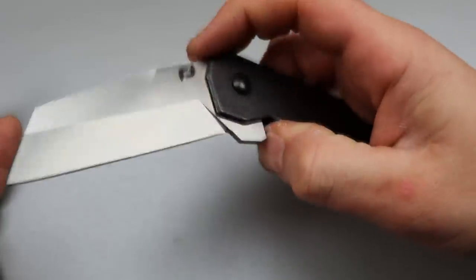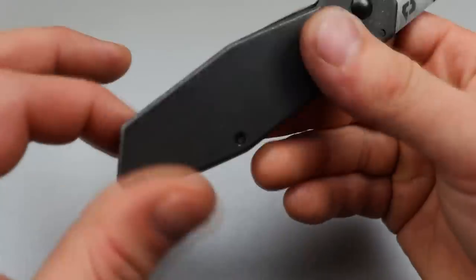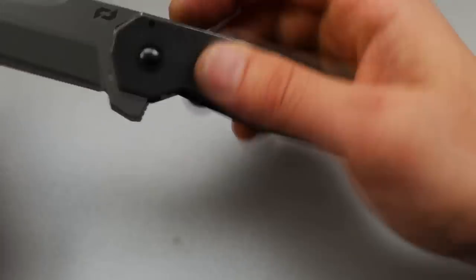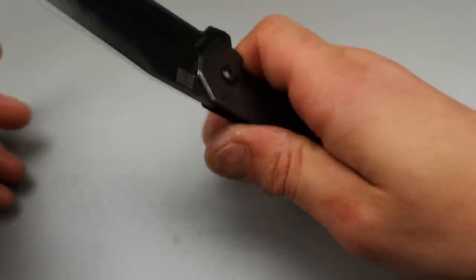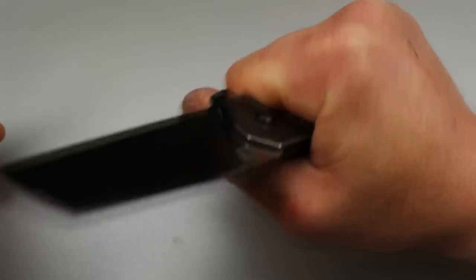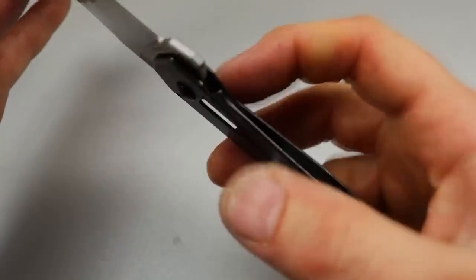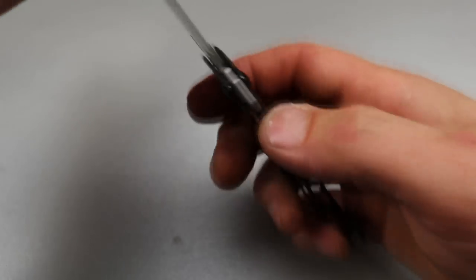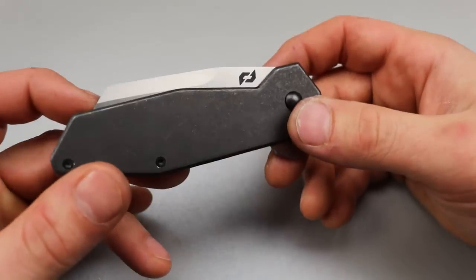It does have really good action, very smooth on the bearings. It has a deep carry clip that's not reversible. But when you're bearing down, you squeeze the lock bar over. If this was a liner lock, you wouldn't have to worry about that. You can see how far mine already is, so it gets a little bit of lock stick here and there.